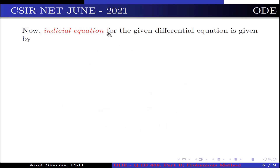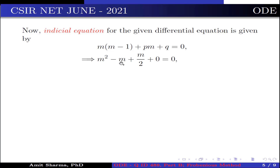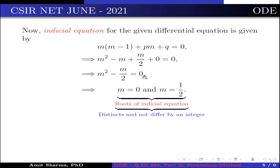Now the indicial equation for the given differential equation is m(m − 1) + pm + q = 0. Substituting the values of p and q, we get m² − m + m/2 + 0 = 0, which simplifies to m² − m/2 = 0, giving roots m = 0 and m = 1/2. These roots are distinct and do not differ by an integer.